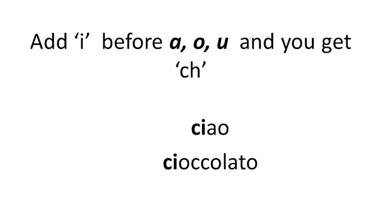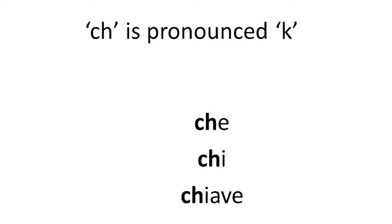If we put an I before that, we make the sound soft again, and we get CH. And we have sounds like ciao, cioccolato — two of the most important words in the Italian language. Finally, with an H in, the C is pronounced K. So we have che, chi, and chiave.